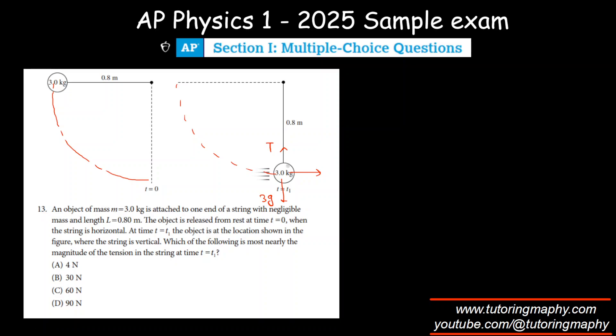The velocity is what we don't know, and this is the radius of the circle. Circular motion concept suggests that the net centripetal force is given by mv²/r. The net centripetal force at time t=t1 will be the force acting towards the center minus the force acting away from the center.